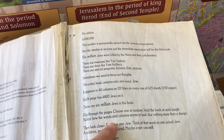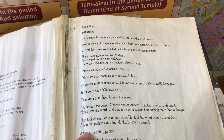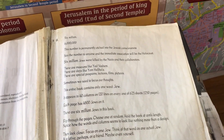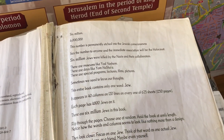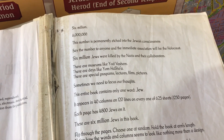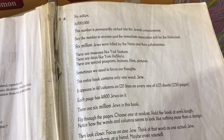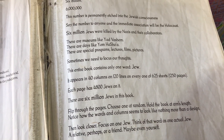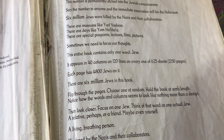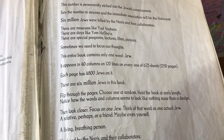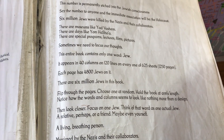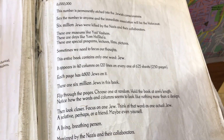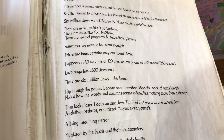Notice how the words and columns seem to look like nothing more than a pattern or design. Then look closer. Focus on one Jew. Think of that word as an actual Jew — perhaps a friend, or even yourself. A living person, taken. Murdered by the Nazis and their collaborators. Now choose a row at random. A whole family — parents and siblings, aunts and uncles, cousins, all gone. Look at another row. Maybe they represent your class at school, or a circle of friends and neighbors.